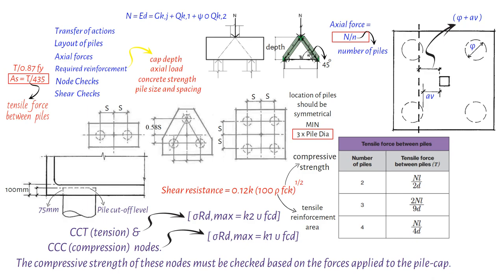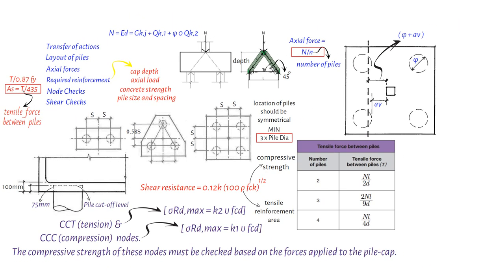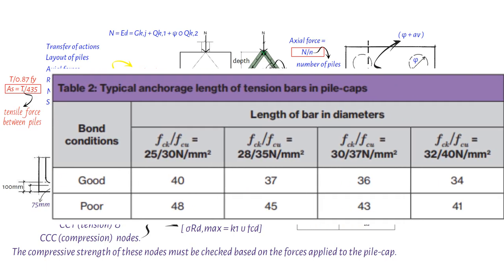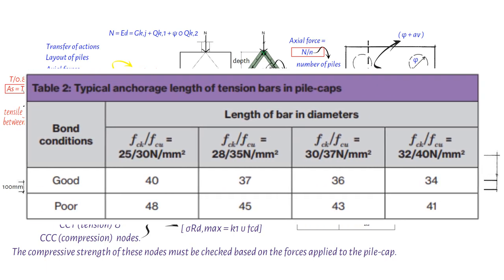Finally, let's discuss detailing rules specific to pile caps. Reinforcement must be placed close to the surface of a concrete pole for proper bonding, and the lengths of reinforcement bars are dependent on concrete strength and bonding, which are listed in Table 2 of BS EN 1992-1-1. For a more precise calculation of anchorage length, clause 8.4.3 of EN 1992-1-1 can be used.